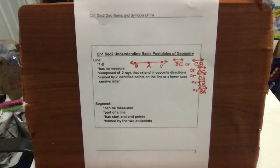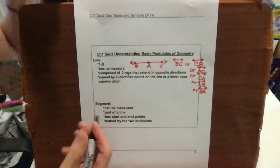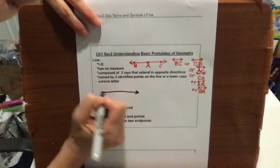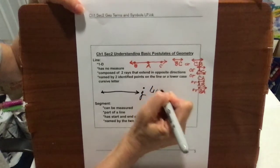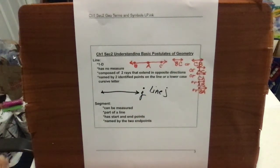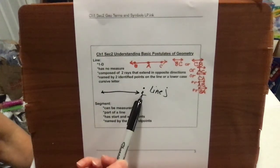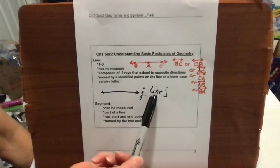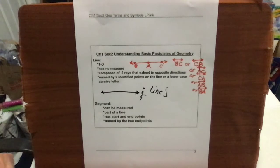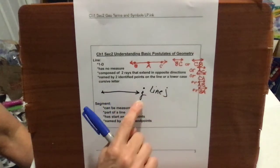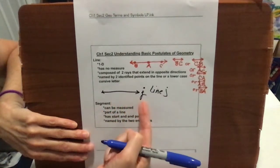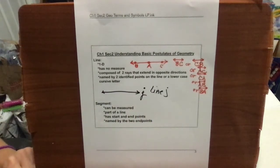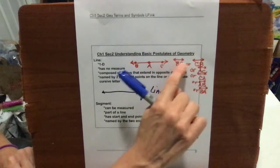Another way to identify a line is not only by naming two points on it, but sometimes you'll have a line identified by a script letter next to it — so that would be line J. When you don't have points identified on your line, you can use a lowercase script letter. If written in text, it would just appear as the lowercase J with no line symbol over it. But when you have two points identifying your line, you must put the line symbol over them.